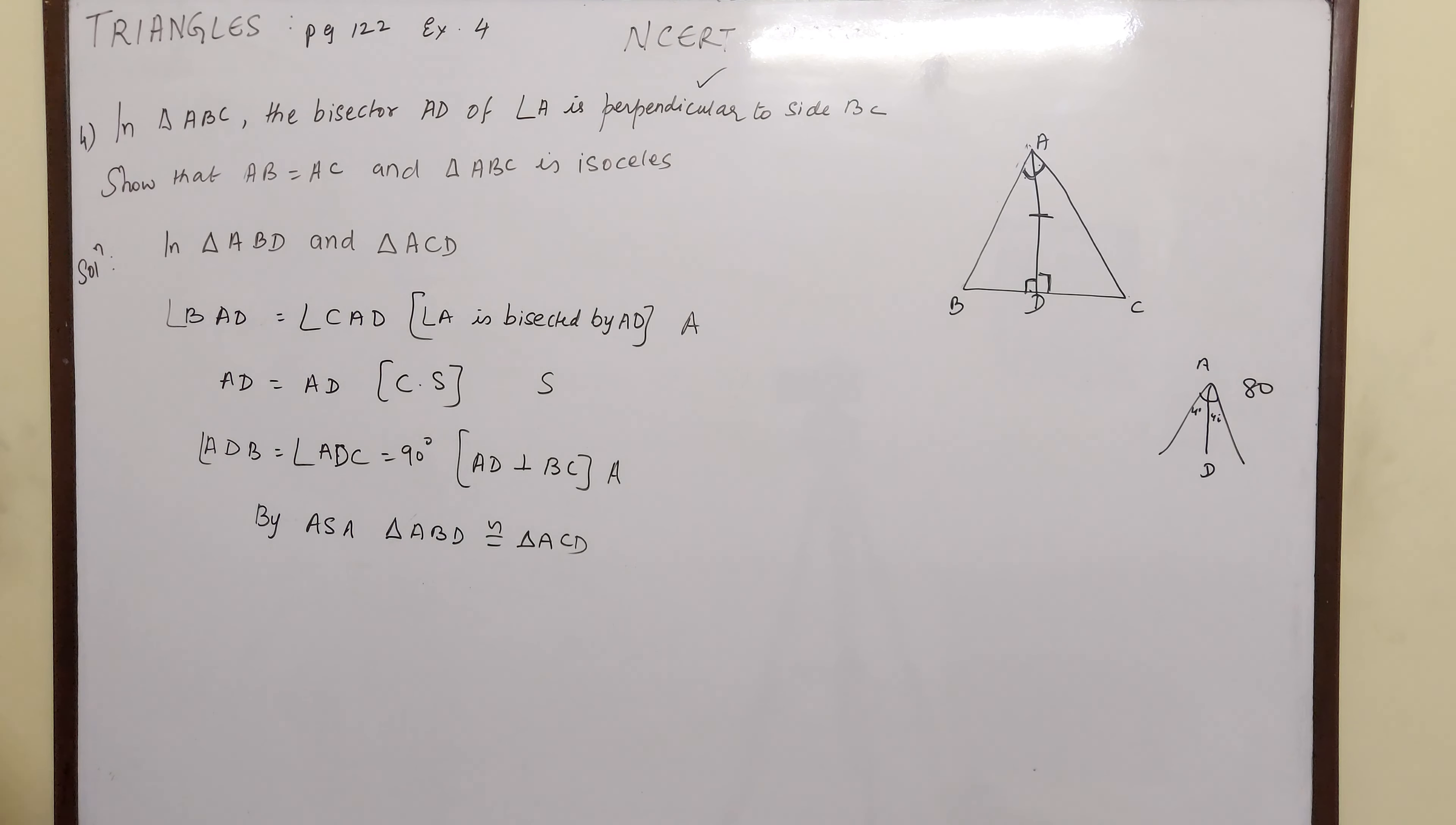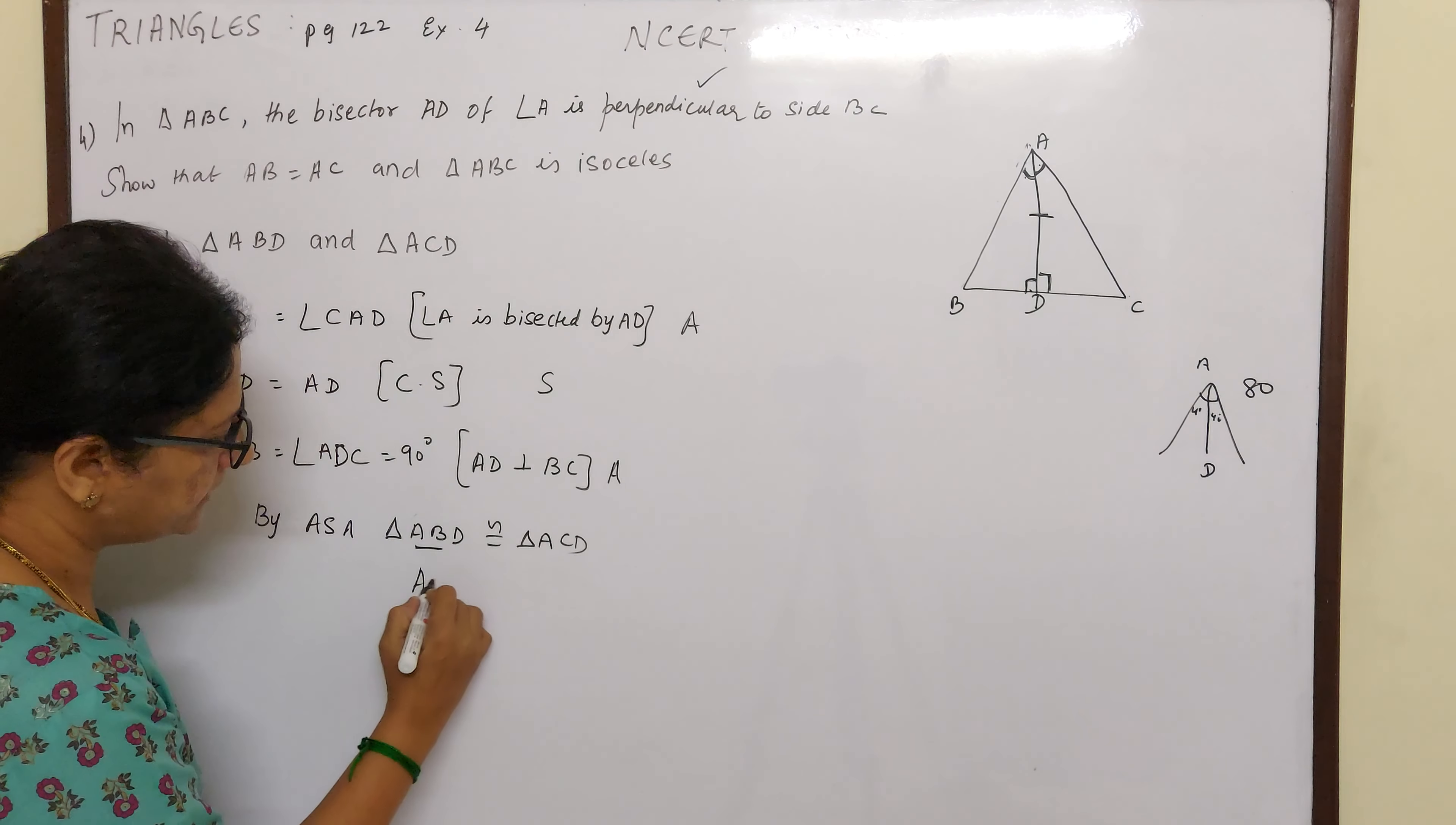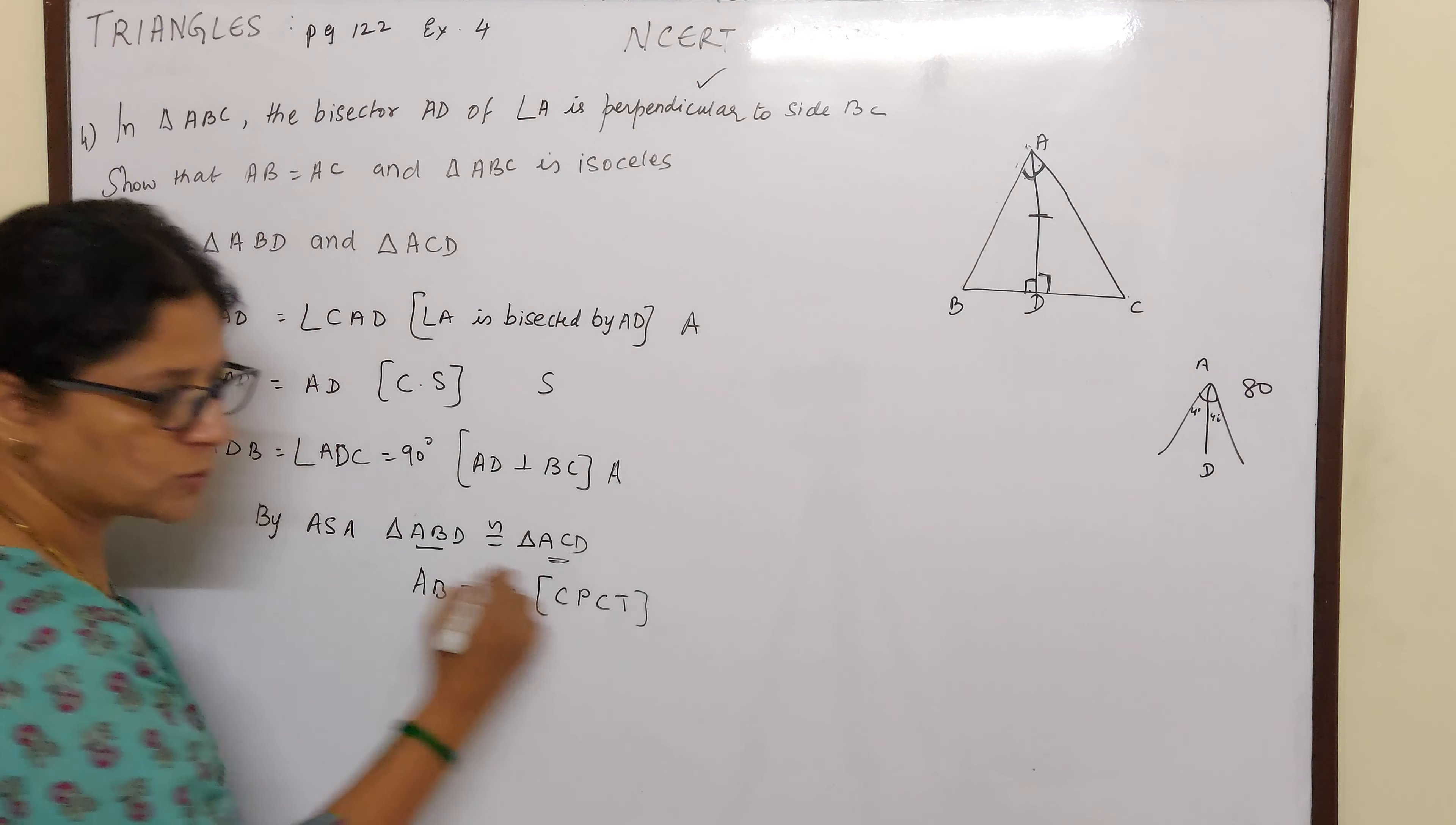Next we have to prove that AB is equal to AC. See, AB is the first two parts and here AC is also first two parts. So they form the same pattern. So congruent parts of congruent triangles.